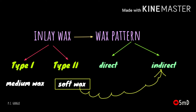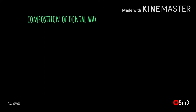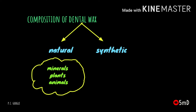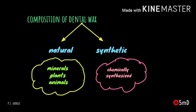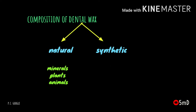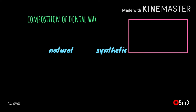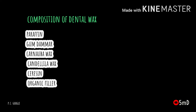The composition of dental waxes is derived either from natural sources or synthetic sources. Natural sources are either minerals, vegetable, or animal derivatives, whereas synthetic waxes are chemically synthesized from naturally occurring wax molecules. Apart from these, modifiers, coloring agents, and fillers are also added to dental waxes.